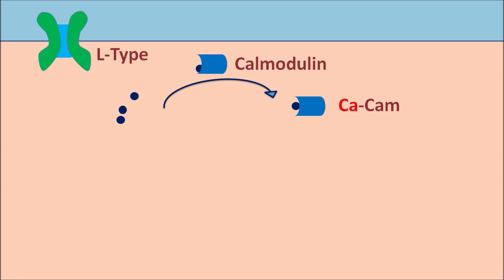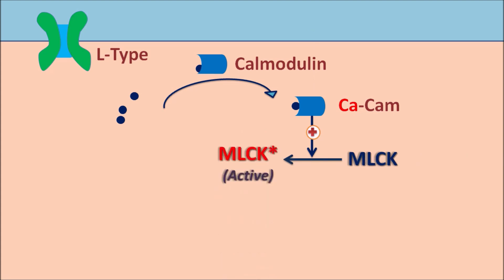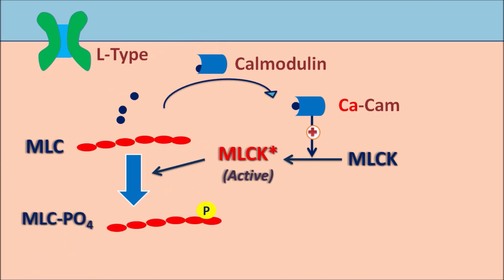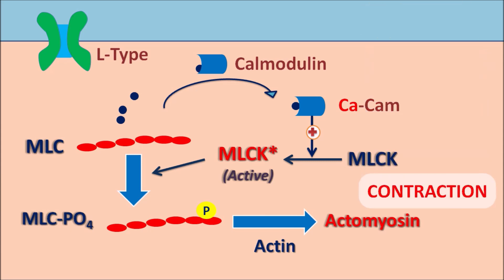The calcium-calmodulin complex acts on MLCK — myosin light chain kinase. These are phosphorylating enzymes normally inactive at resting conditions. When calcium levels increase and form a complex with calmodulin, this complex activates MLCK into its active form. The active MLCK phosphorylates the myosin light chains — specifically the regulatory light chain — to produce phosphorylated myosin light chains (MLC-phosphate). In the phosphorylated form, myosin can bind with actin to form the actomyosin complex, which is responsible for contraction of the vascular smooth muscle.